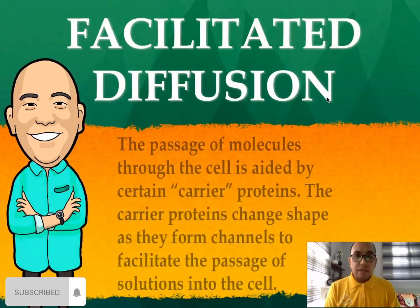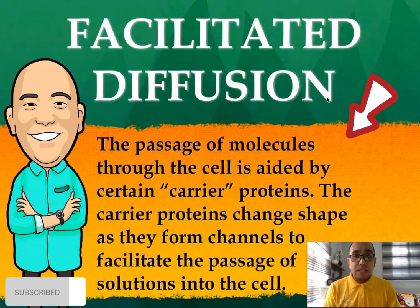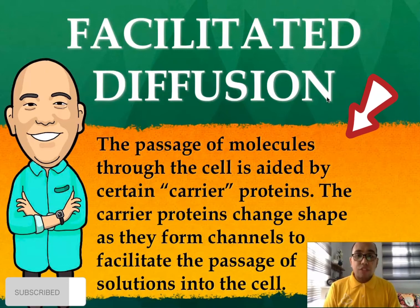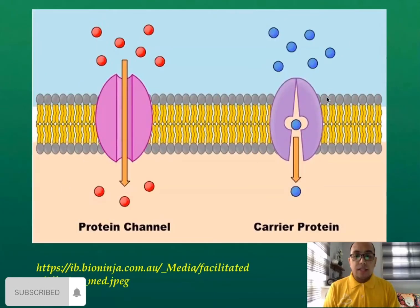The second type of passive transport is facilitated diffusion — the passage of molecules through the cell aided by certain carrier proteins. The carrier proteins change shape as they form channels to facilitate the passage of solutes into the cell, as shown in this illustration.